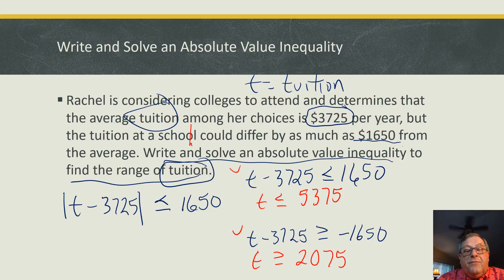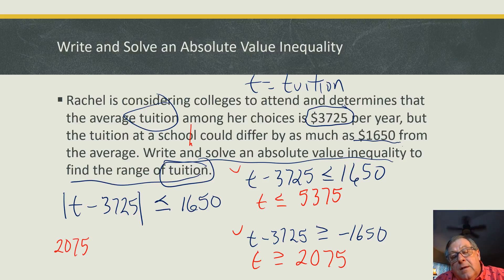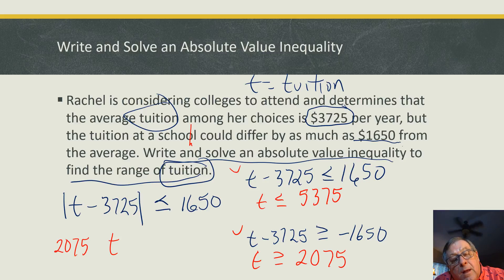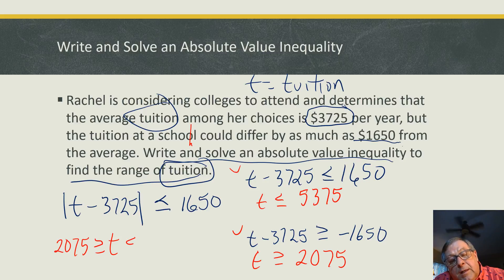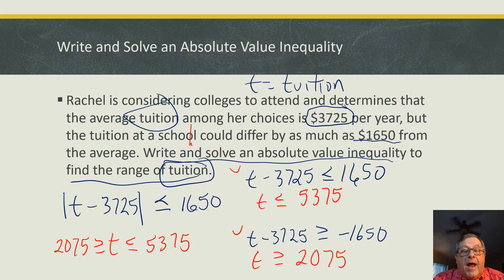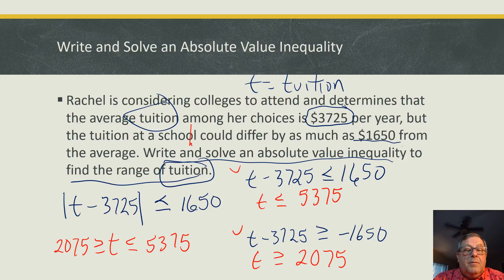In set builder notation, our range is: t is greater than or equal to two thousand seventy-five and less than or equal to five thousand three hundred seventy-five. It's a compound inequality — the intersection of the two solution sets. Tuition might be as low as $2,075 and as high as $5,375.